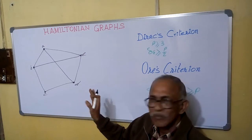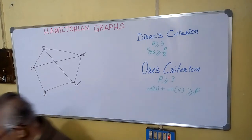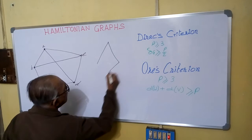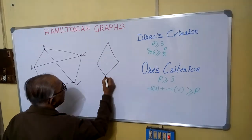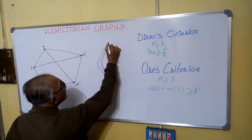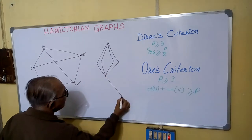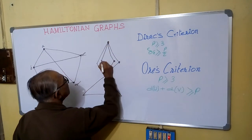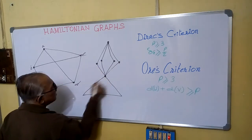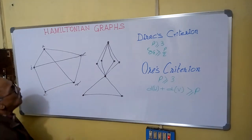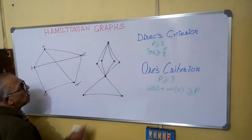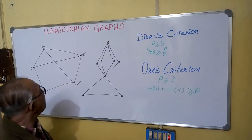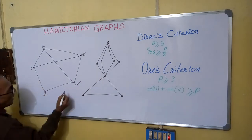Now what is not a Hamiltonian graph? Which one will not be a Hamiltonian graph? Let us draw another graph. Suppose these are the vertices. We cannot draw a cycle combining all the vertices, since it is not possible. That is why it is called a non-Hamiltonian graph.